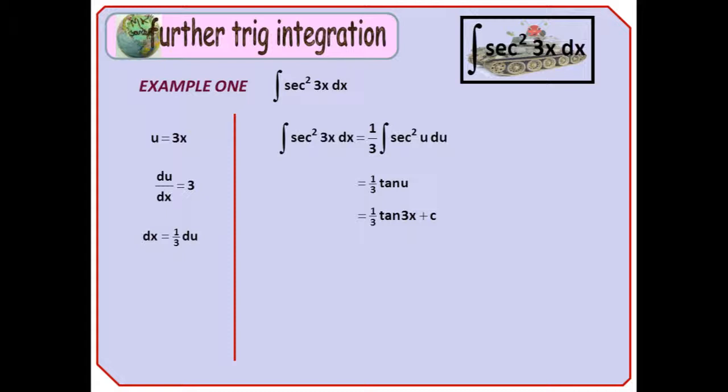Don't forget the golden rule for integration by substitution, which is that we have to substitute for the dx as well. We do this by differentiating u equals 3x to get du by dx is 3, so dx is a third of du. So after substituting, integrating, and substituting back, we get a final answer of a third tan 3x, plus c.